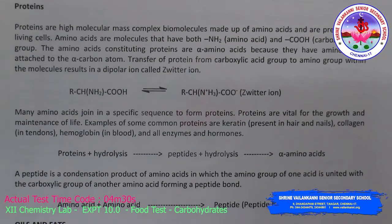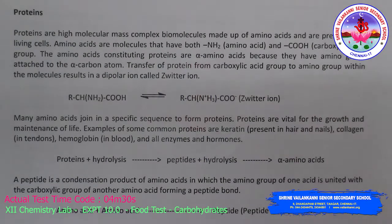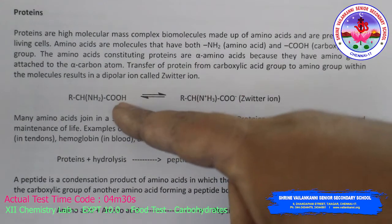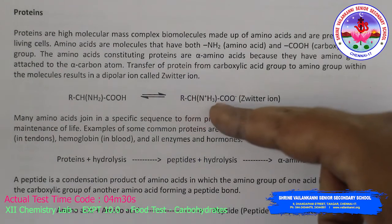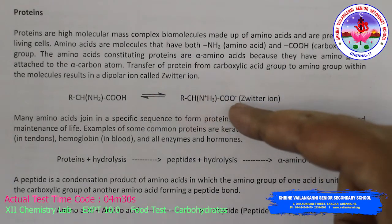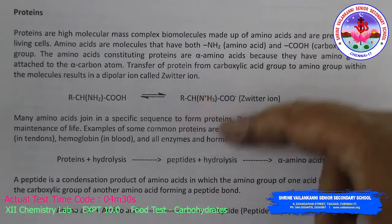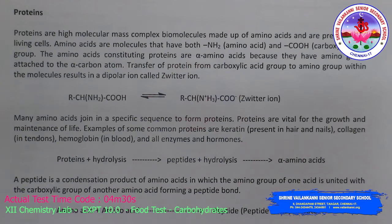The transfer of a proton from the carboxylic acid group to the amino group within the molecule results in a dipolar ion called a zwitterion. The amino acid contains both NH3+ and COO- groups — both positive and negative charges are present, meaning the charges are shifting and rearranging. This dipolar structure is called a zwitterion.